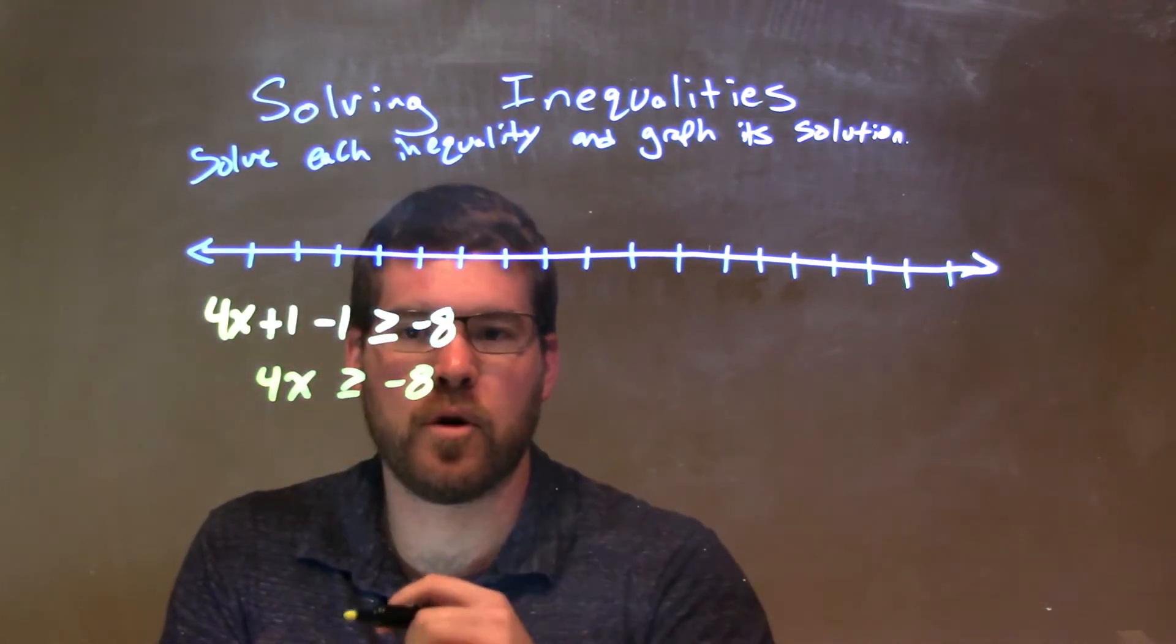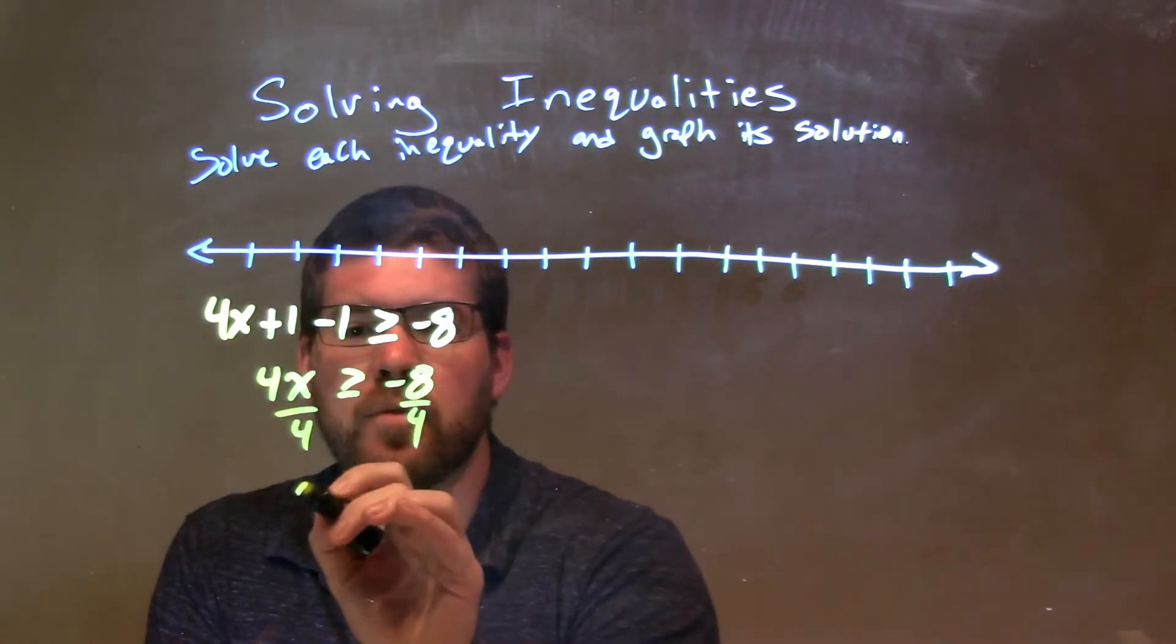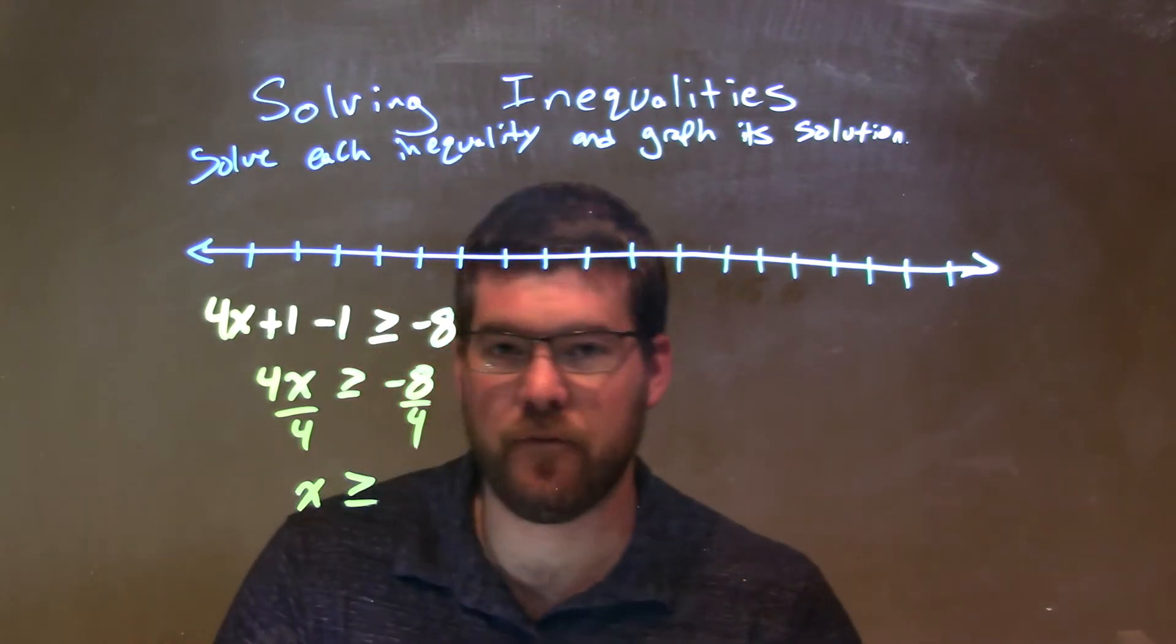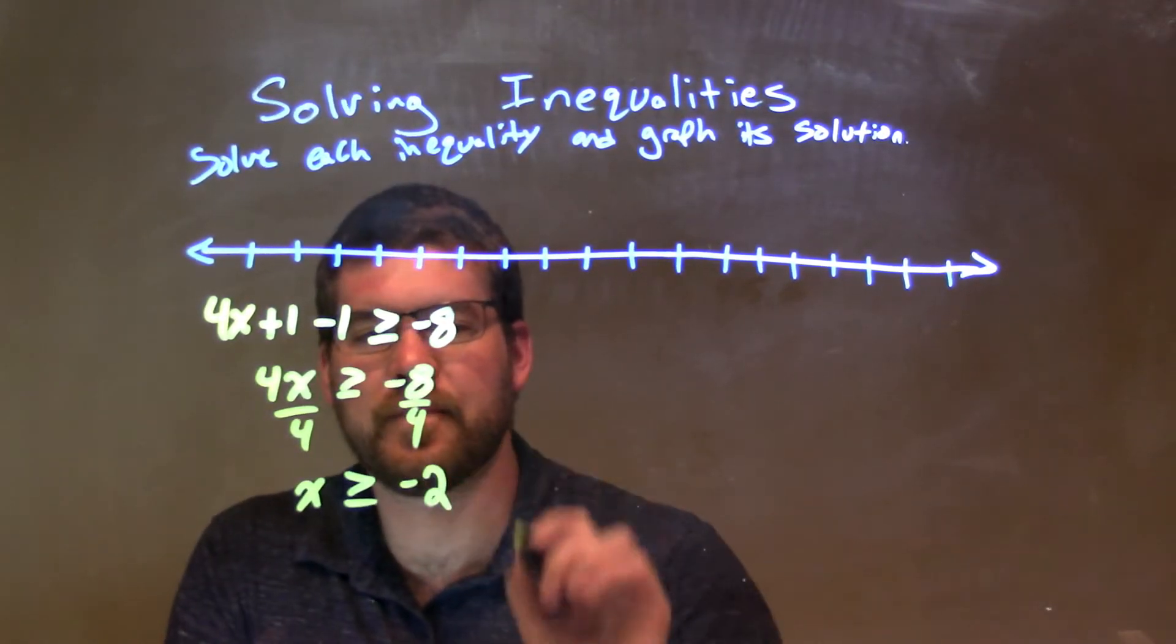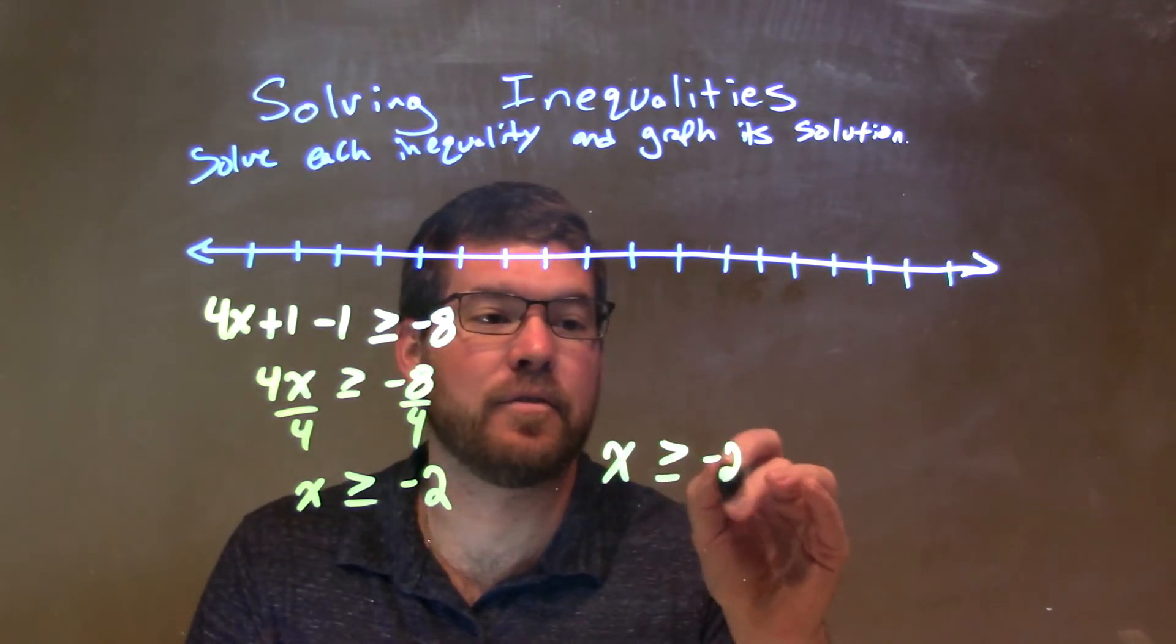And I want to divide by 4 to both sides. So we divide by 4 to both sides. And we're left with x is greater than or equal to negative 8 divided by 4, which is negative 2. And so our final answer again is just x is greater than or equal to negative 2.